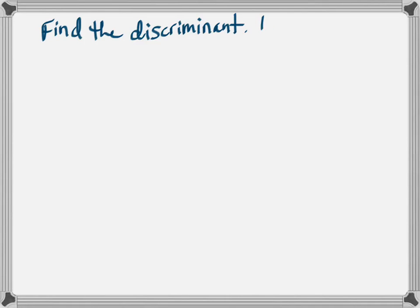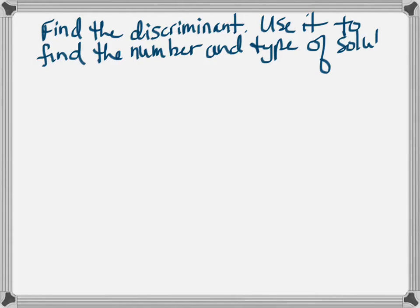All right, we're going to find the discriminant, and then we're going to use it to find the number and the type of solutions. We're not actually finding the solutions for our quadratic, but we're just going to find the number and the type of solutions.